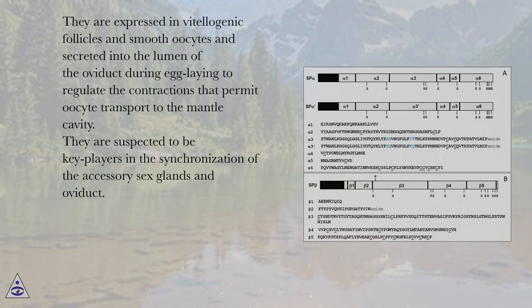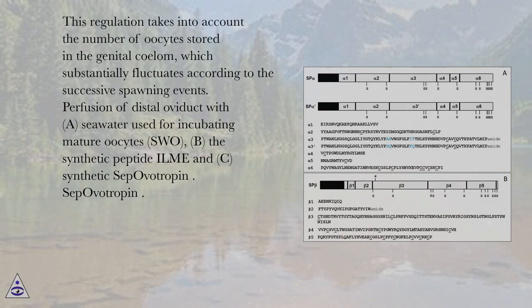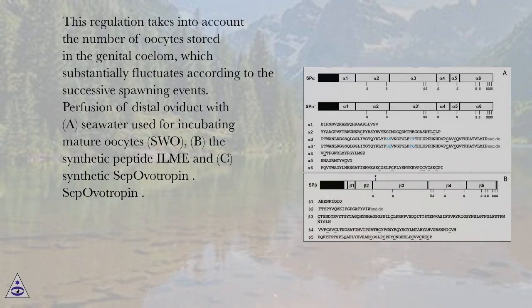They are expressed in vitalogenic follicles and smooth oocytes and secreted into the lumen of the oviduct during egg-laying to regulate the contractions that permit oocyte transport to the mantle cavity. They are suspected to be key players in the synchronization of the accessory sex glands and oviduct. This regulation takes into account the number of oocytes stored in the genital celem, which substantially fluctuates according to the successive spawning events.